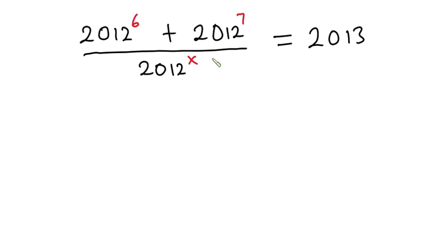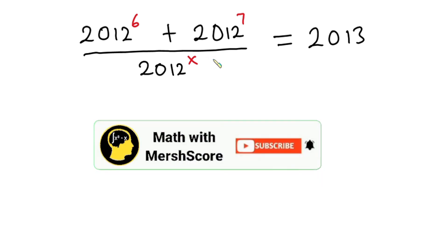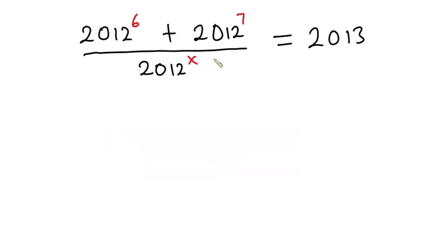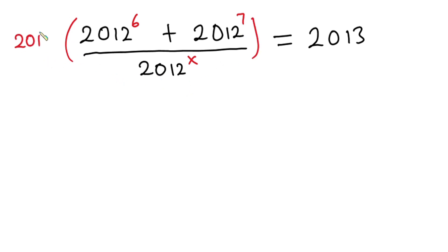If you are new here, consider subscribing and don't forget to turn on the bell notification so that you'll be notified whenever I upload good videos like this. Thanks a lot for subscribing. Now let's get started. First, let's multiply each side of the equation by the denominator, which is 2012 to the power x.